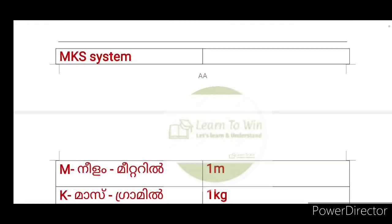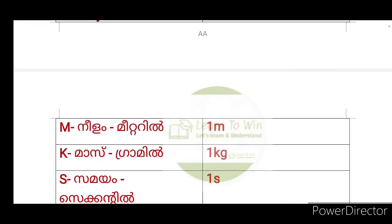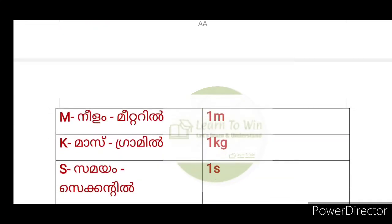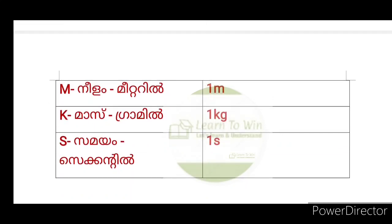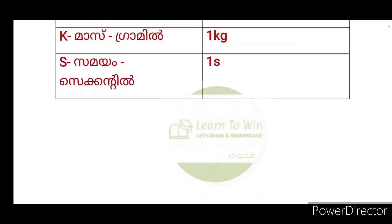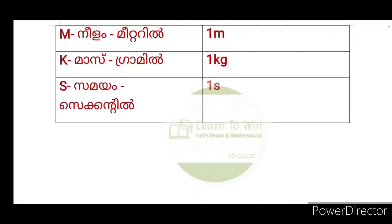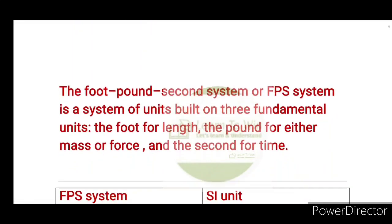In SI units, M is for meter, K is mass in kilogram, and S is time in second. So 1 meter is the unit of length, 1 kg is the unit of mass, and 1 second is the unit of time.